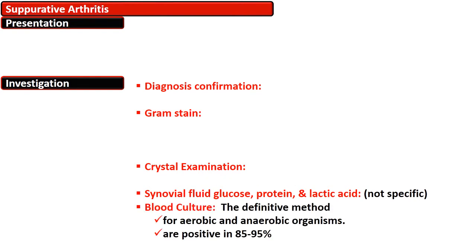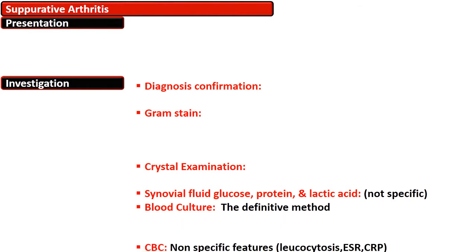Blood culture is the definitive method for aerobic and anaerobic organisms and is positive in 85 to 95% of cases. CBC shows non-specific features, though leukocytosis, increased ESR, and CRP can be seen.